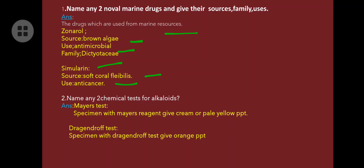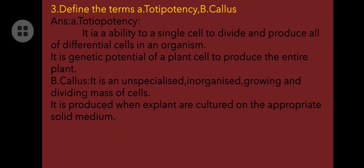Name any two chemical tests for alkaloids. First, Mayer's test: the sample with Mayer's reagent gives a cream or pale yellow precipitate. If pale yellow precipitate is observed, that indicates an alkaloid such as belladonna or atropine. Second, Dragendorff's test: the specimen with Dragendorff's reagent gives an orange precipitate.